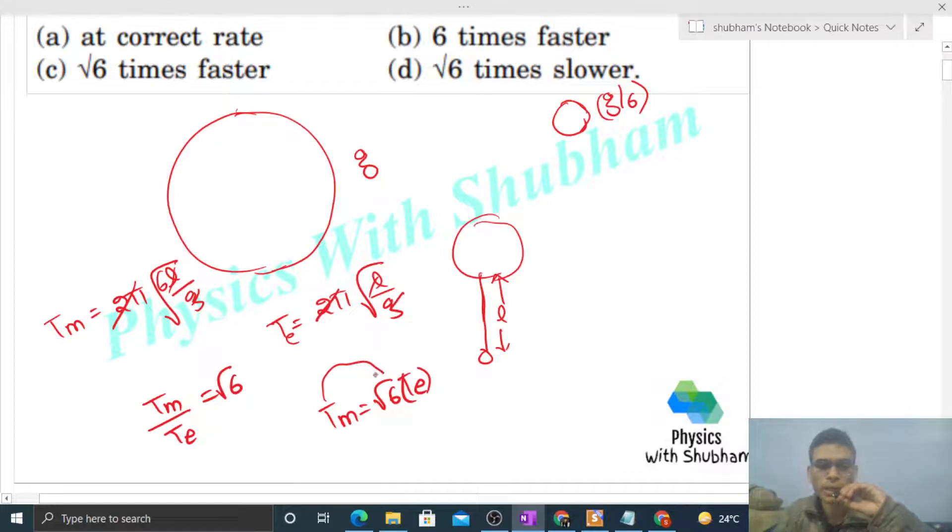So aap dhekho ki time period Moon pe jane pe increase ho jayega. It means ye jo pendulum hai, dhiray dhiray move karayega. It means ye jo clock hai, dhiray dhiray move karayegi. Means is me time kya ho jayega? Slow ho jayega, kitne times? Root 6 times.